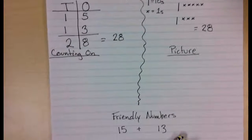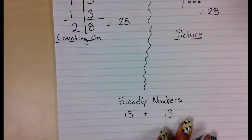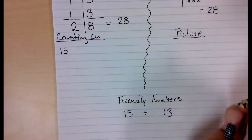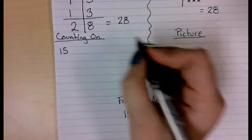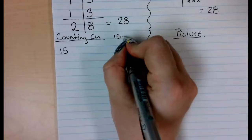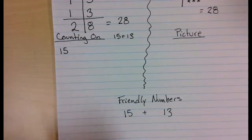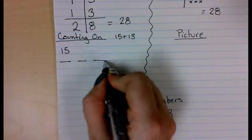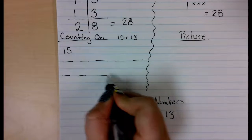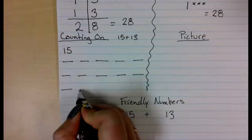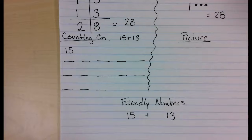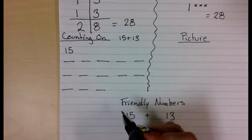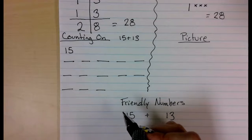The next strategy I am going to show you is counting on. And so we start with our 15, and we are going to be adding 13, because it is 15 plus 13. So I want 13 spaces. You can also do this on your fingers. I am doing it on paper with spaces so that you can see how it is done.